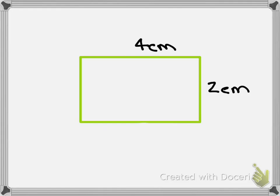So both of my examples are going to be with rectangles. So here we have a rectangle. I can see that this side here is 2cm, this side of the rectangle, and I can see that this side of the rectangle is 4cm.